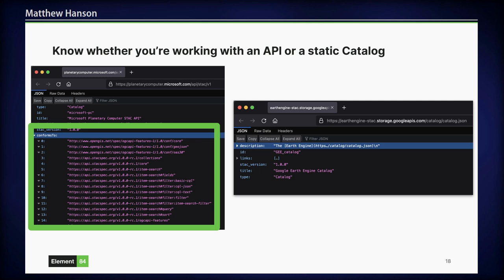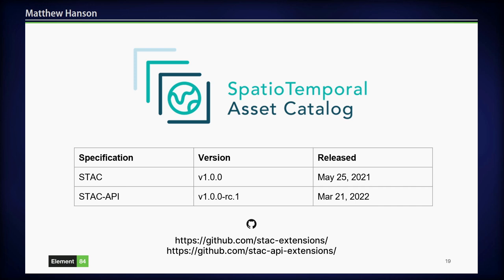STAC is at version 1.0, has been for over a year. STAC API is at release candidate 1 of its version 1 — I think there might be a version 2 coming up soon. Both specifications are hosted on GitHub, and both have an extensions organization. The extensions are where we do dynamic additions to the specification. Phil Varner just recently split out all of the STAC API extensions to its own organization.